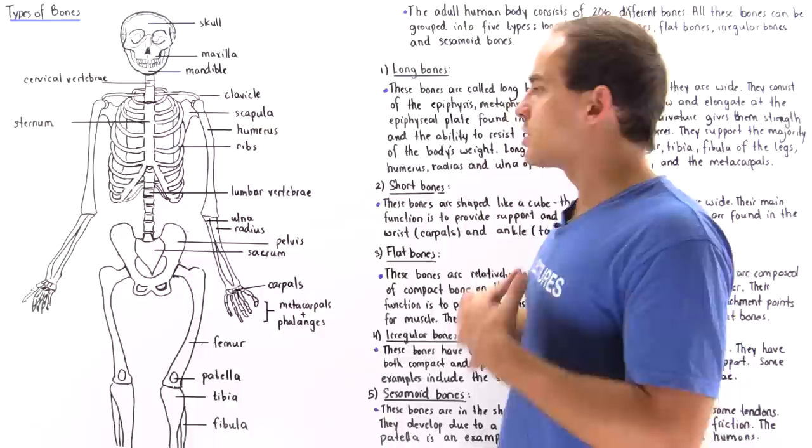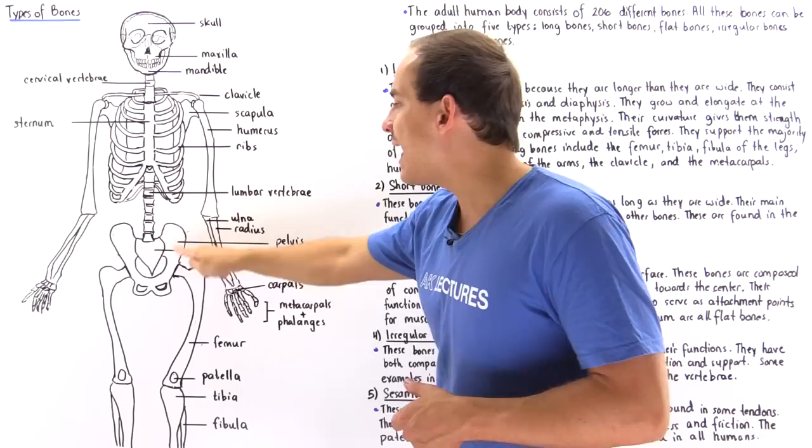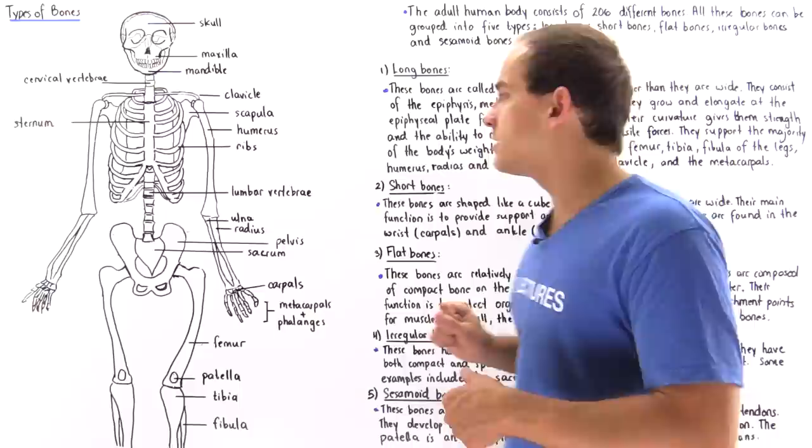Other examples of flat bones include the scapula, which is the shoulder blade, as well as the pelvis, which is the bone of the hip. These bones have a relatively large surface area and are relatively flat and thin.